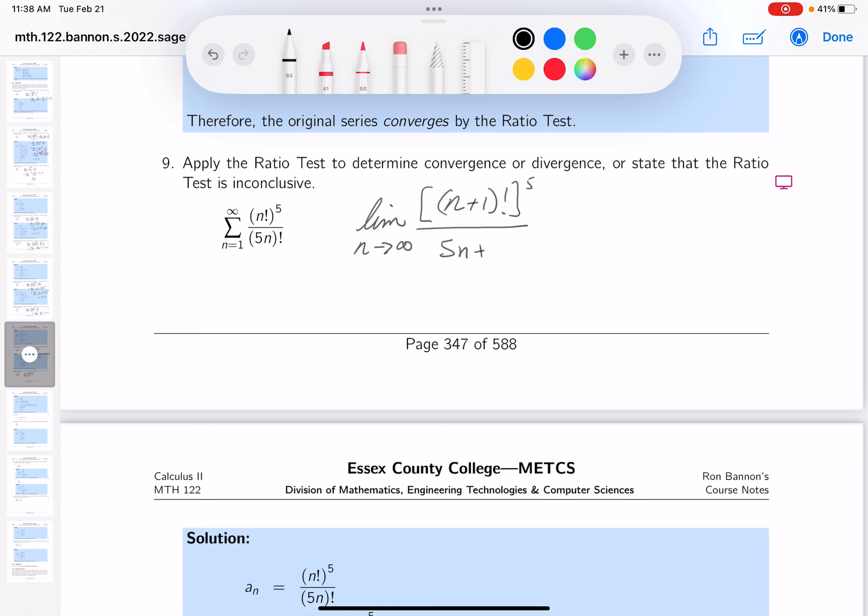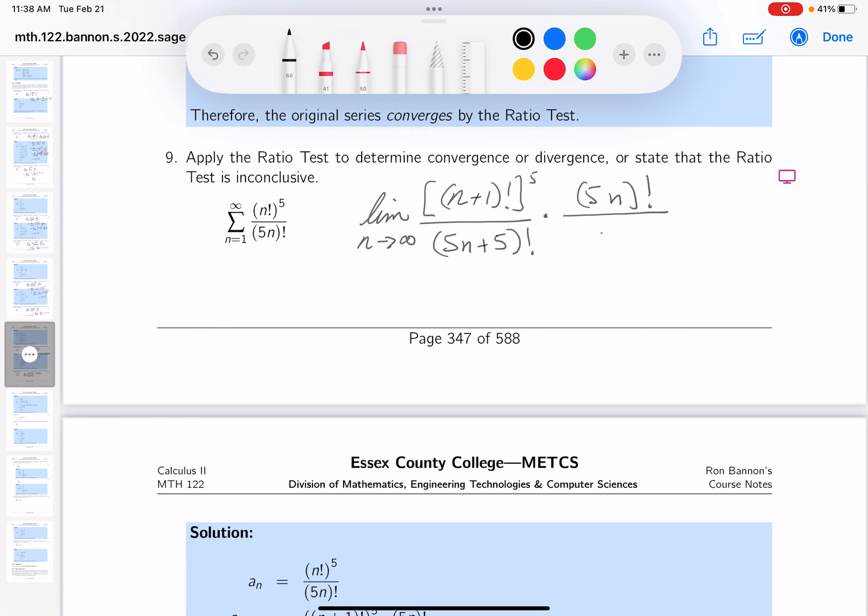over (5n+5)! times 5n!. And at the bottom, you're going to get n! to the fifth power. All right, this is some work here.